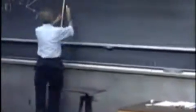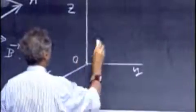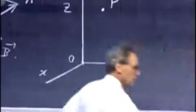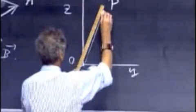That's going to be very important, and I want you to follow this quite closely. I have a vector in three-dimensional space. This is my z-axis, x-axis, y-axis. This is the origin O, and here is a point P, and I have a vector OP.